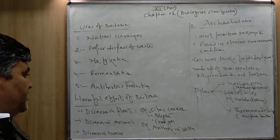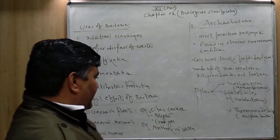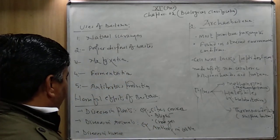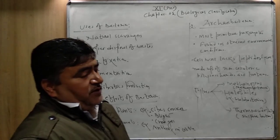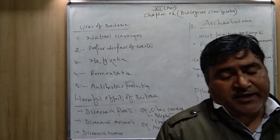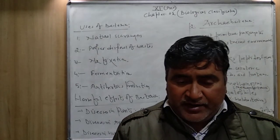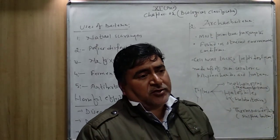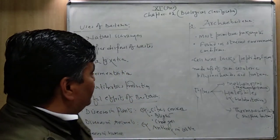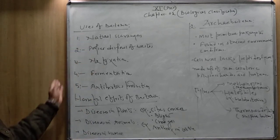Diseases in animals and humans: there is a particular disease called anthrax in cattle. In human beings, bacteria cause many diseases like tuberculosis, cholera, and diphtheria. These are the importance and the harmful activities of bacteria.